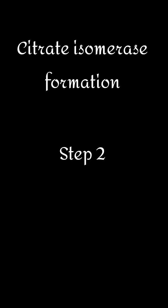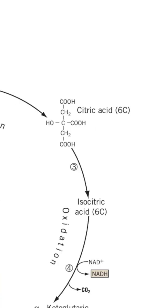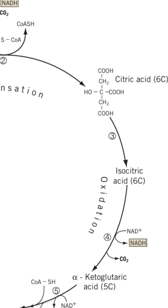Step 2: Citrate isomerization. In the second step, citric acid is first converted into an intermediate compound called cis-aconitate, then converted to isocitrate, which is an isomer of citrate, in the presence of aconitase enzyme.